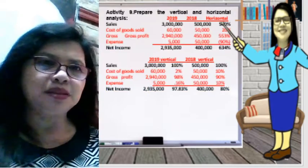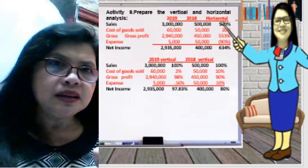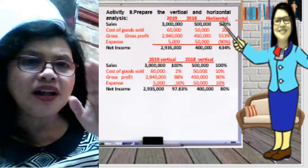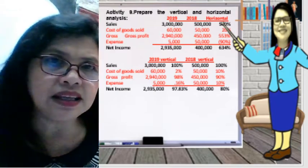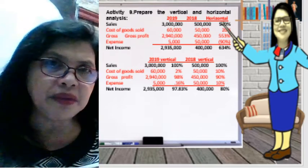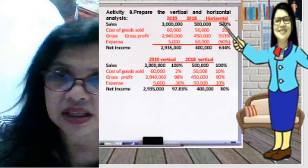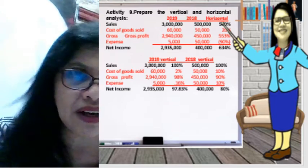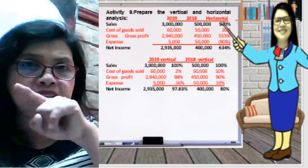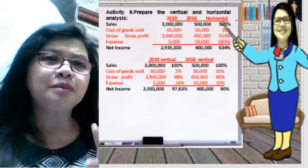Now let's go to the income statement. For the horizontal analysis, the same rule applies — we compare one account from one year to the other. The sales account of 2019 compared to 2018: current year 3,000,000 minus previous year 500,000 divided by 500,000 gives a 500% increase. Sales increased from 500,000 to 3,000,000.